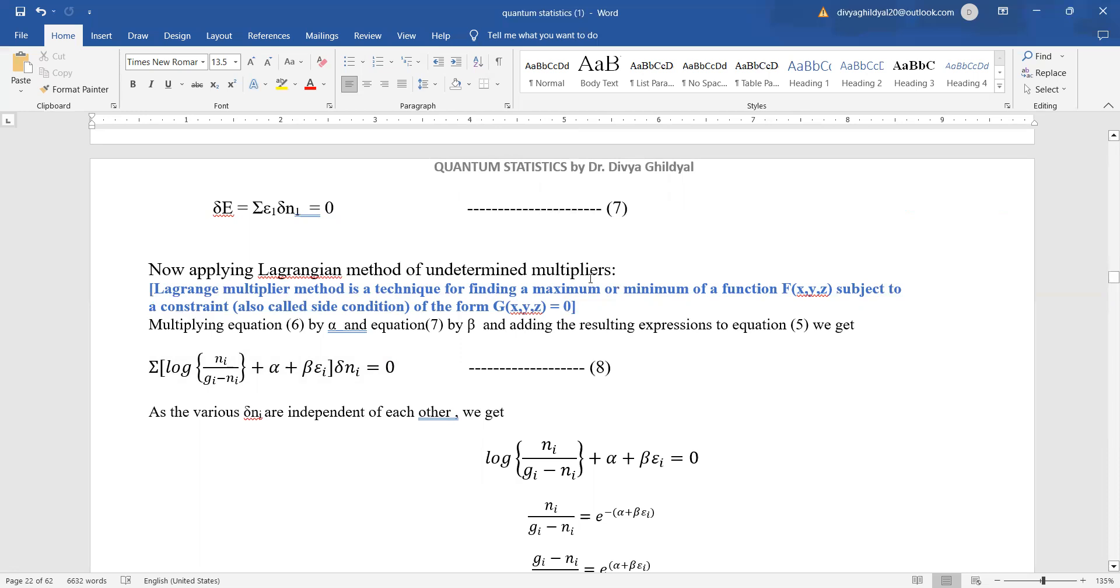We apply Lagrangian method of undetermined multipliers, which is basically a technique for finding a maximum or minimum of a function subject to a constraint of the form that g(x,y,z) equals to 0. So once we do this...